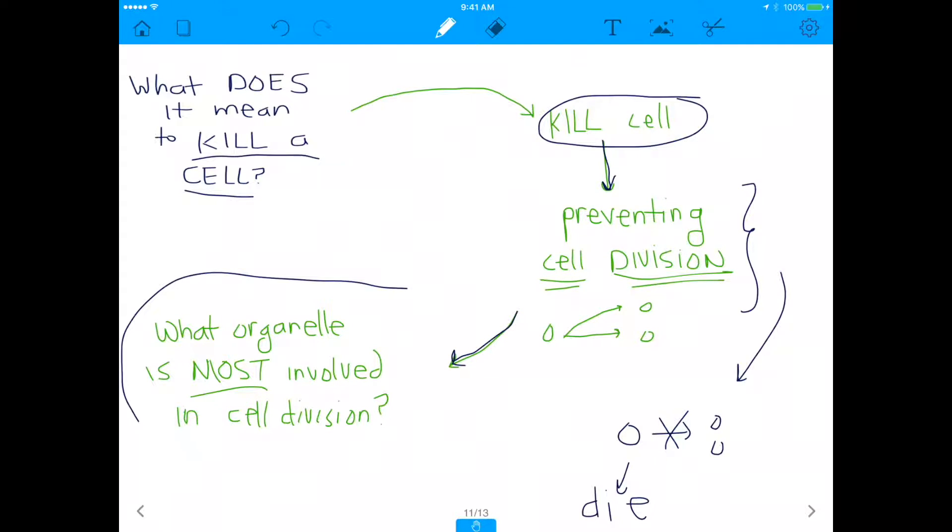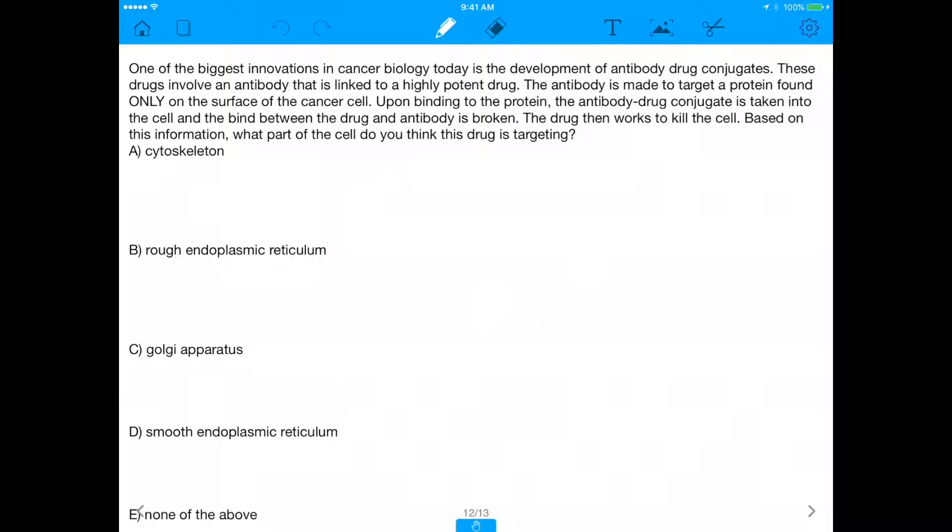Because the organelle that is most involved in cell division is the one that we're going to want to inhibit, because we want the cell to not divide. We want to instead make sure the cell dies. So with that, let's go through this list.